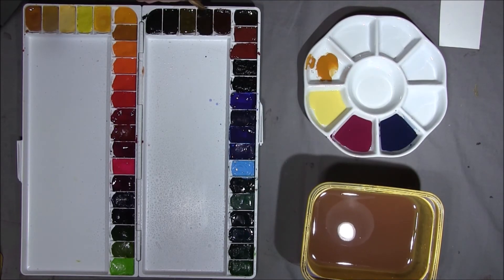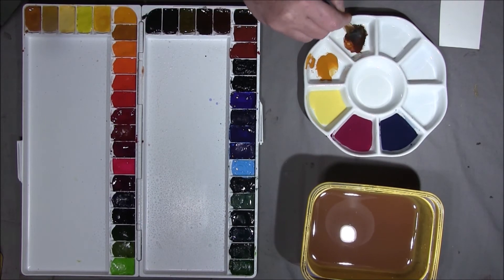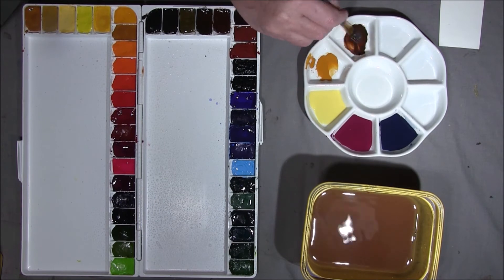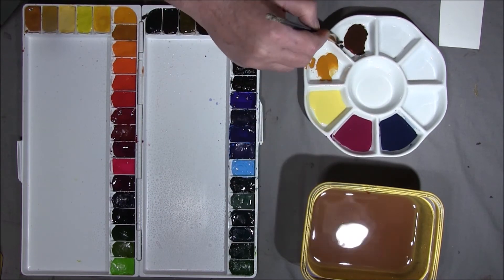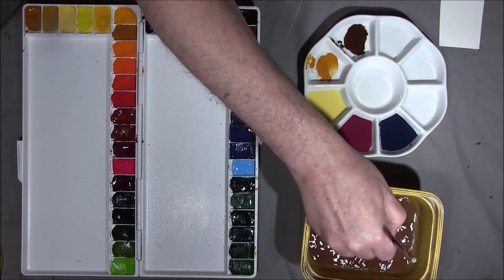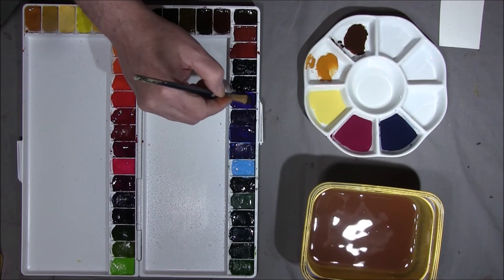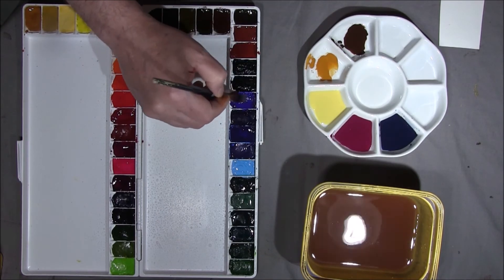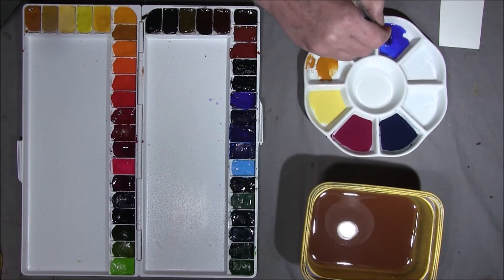I'm just going to drop in some burnt umber here. This will be used for mixing, just in case I need to darken the color. And also some French Ultramarine.